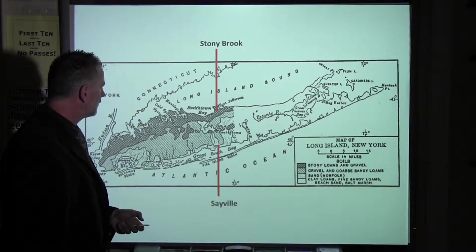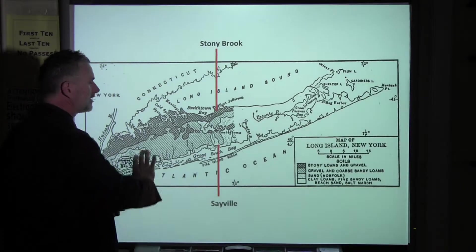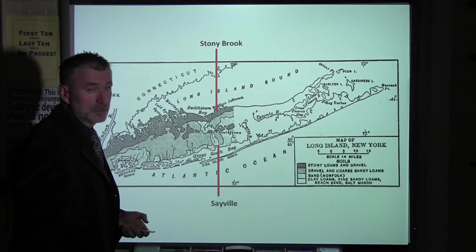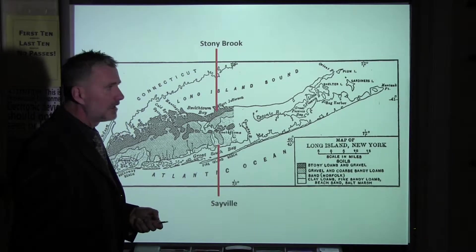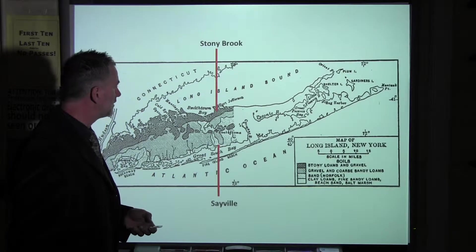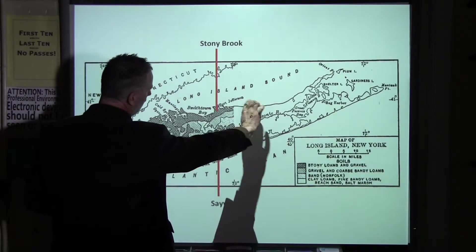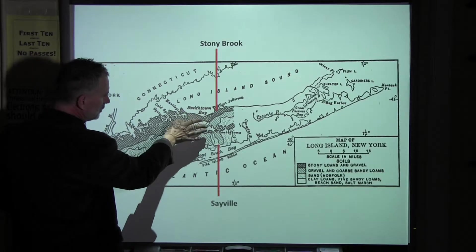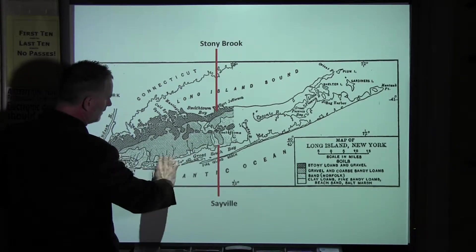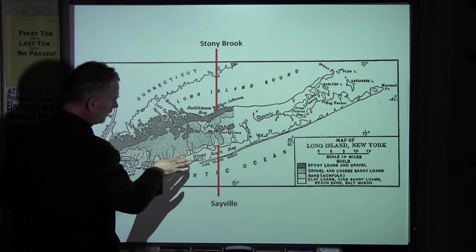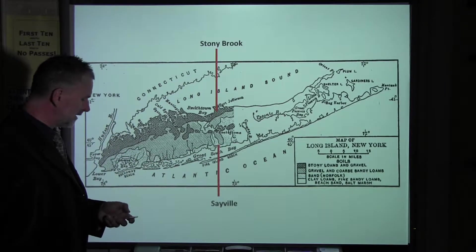Another set of information comes from the study of till. Till covers the entire island, but we don't actually have a study of till — we have a study of soil, and that's why different terminology is used here. We have rocky loams on the north shore, and they change to gravelly loams — which would be gravelly tills — and then sandy loams very close to Great South Bay, which are actually sandy tills.